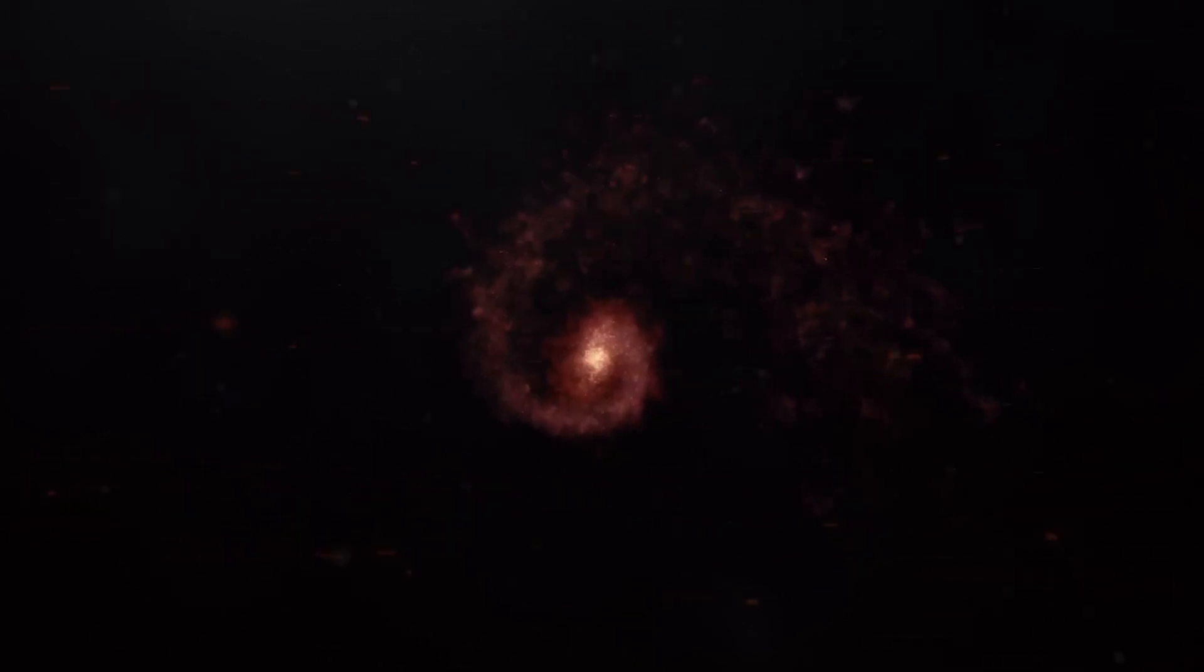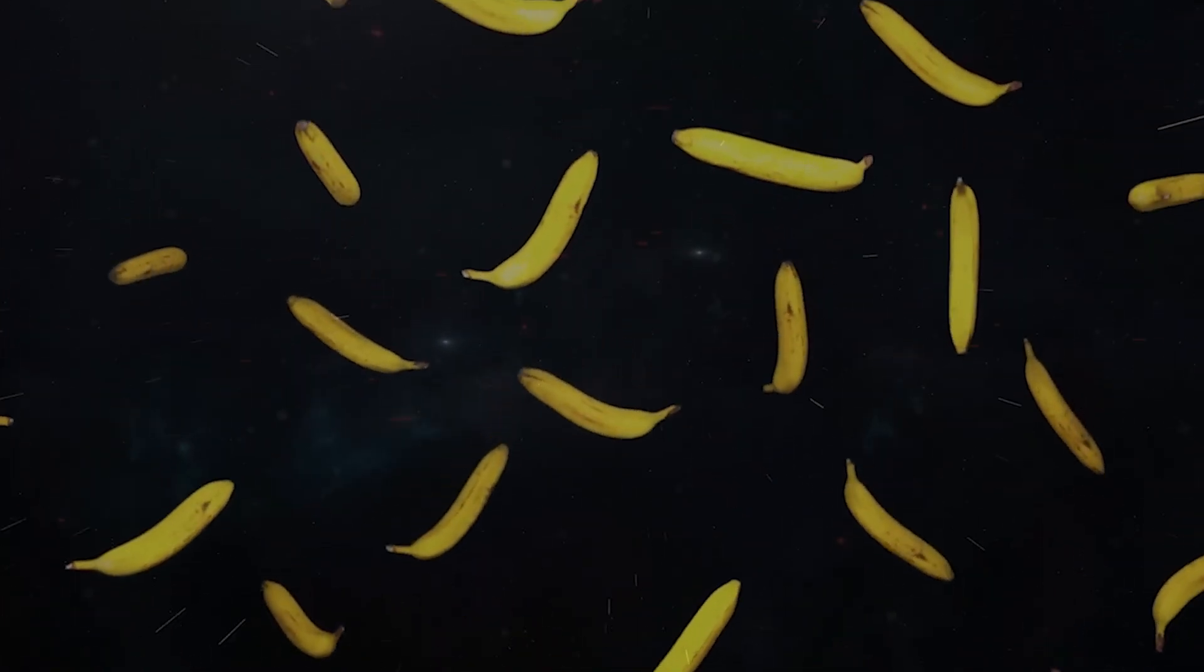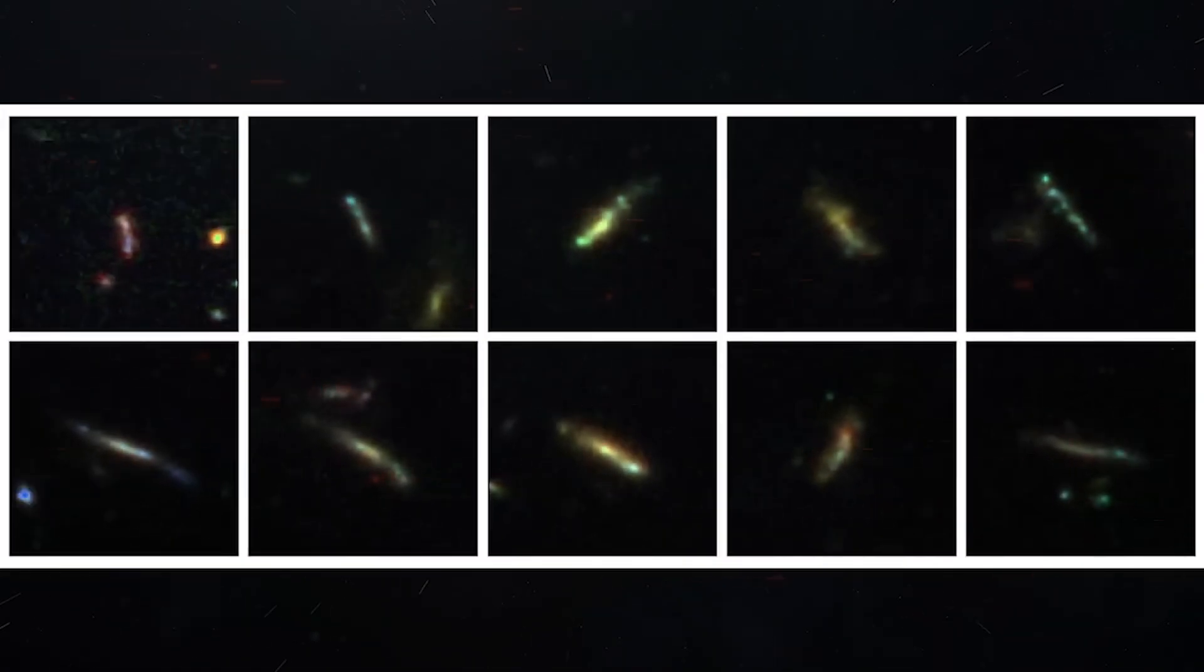However, the telescope's new images have astounded researchers by revealing something far stranger. These nascent galaxies bear an uncanny resemblance to bananas. Astonishingly, this conclusion comes after a meticulous re-examination of 4,000 newborn galaxies captured by Webb at the dawn of time.